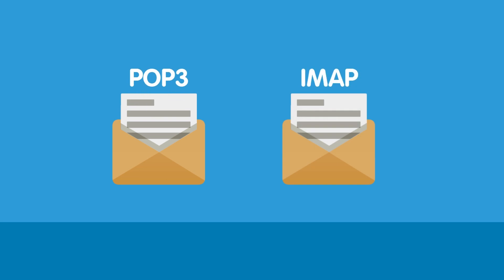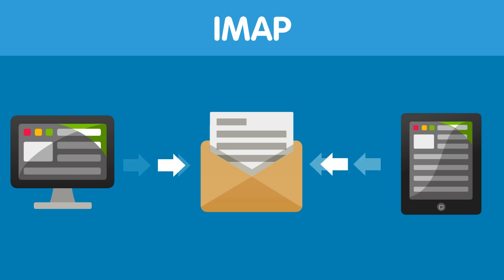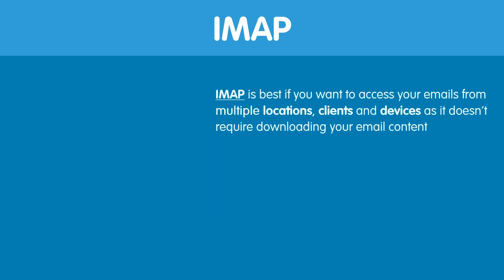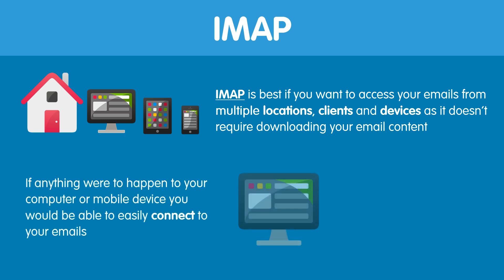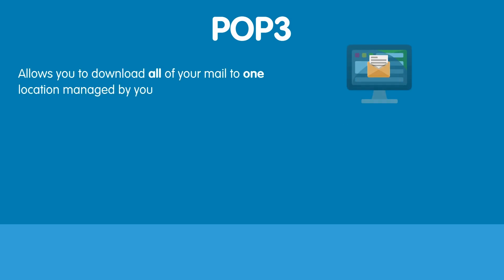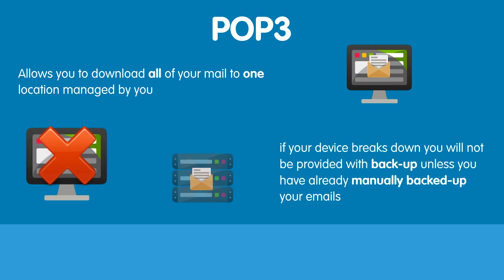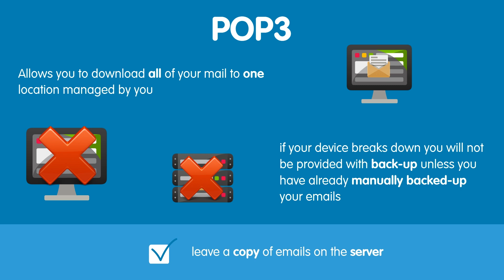Now we know the basics of POP3 and IMAP, let's look at the differences to help you decide which one to use. Which protocol you use is dependent on your lifestyle and how you want to access your emails. IMAP is best if you want to access your emails from multiple locations, clients and devices, as it doesn't require downloading your email content. Because of this, if anything were to happen to your computer or mobile device, you would be able to easily connect to your emails. POP3 is a simple choice which allows you to download all of your mail in one location managed by you. However, if your device breaks down, you will not be provided with backup unless you have already manually backed up your emails or were given the option to leave a copy of the emails on the server.